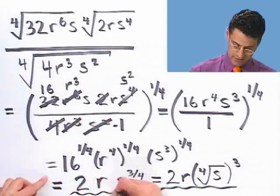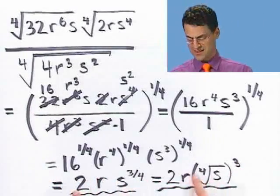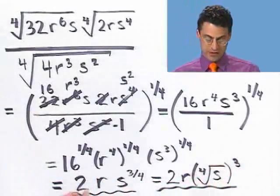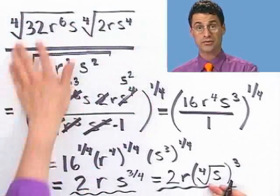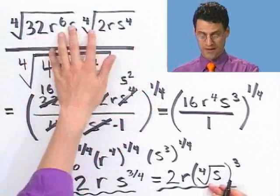Either way, it's a dramatic simplification from the original expression. Working with variables using factoring, exponents, and radicals is not a big deal — all you need is careful bookkeeping, cancel all the common factors carefully, and you're home free.